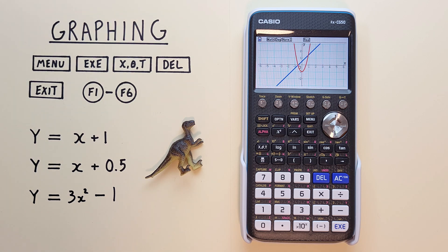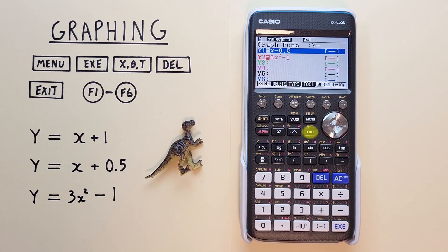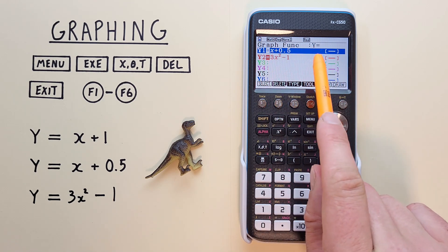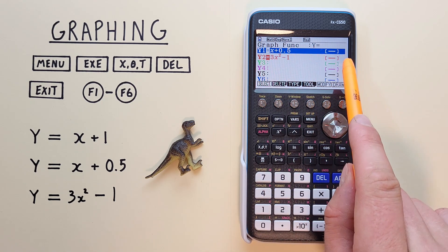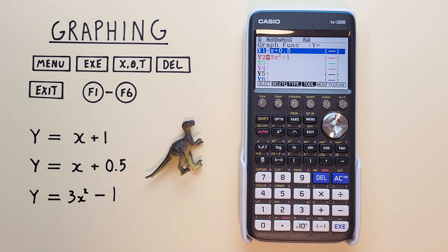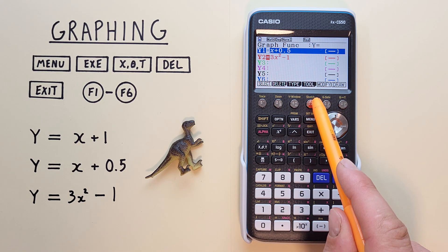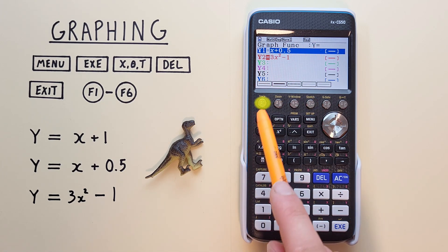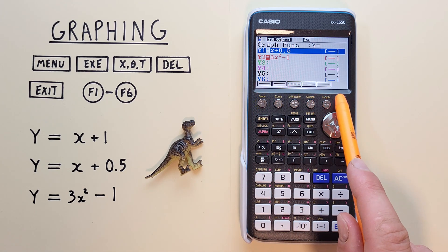We can also change the line work style. If we go Exit, and let's say we want to change this Y1 instead of being a solid line into a dotted line. To do that, we just press F4 for Tool, and then F1 Style.